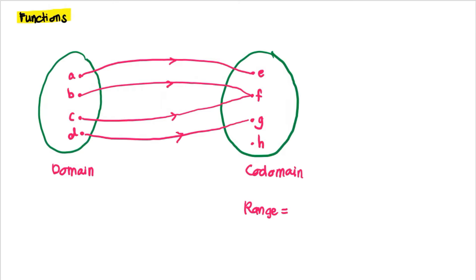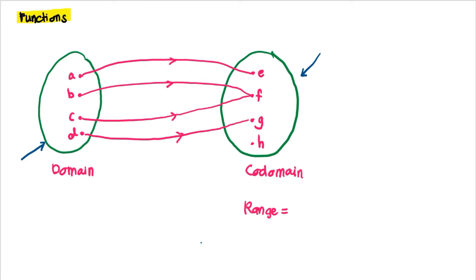Today we are going to learn about functions. Suppose we have a domain set — we call this part the domain and this the codomain. The elements in the domain are called objects, and the elements in the codomain that are mapped to are called images.